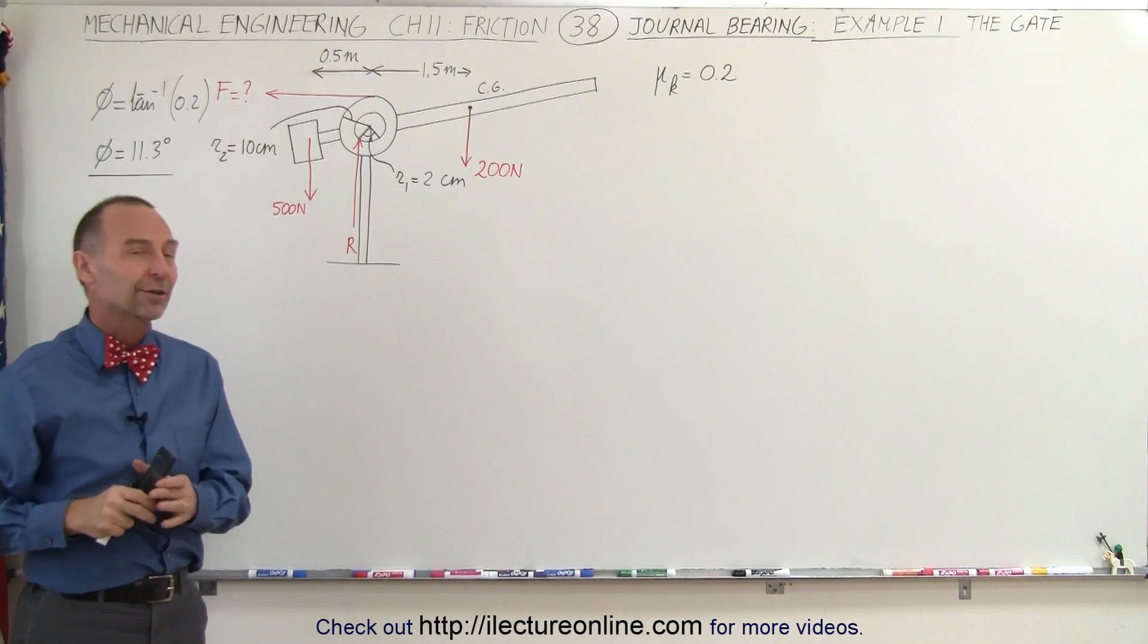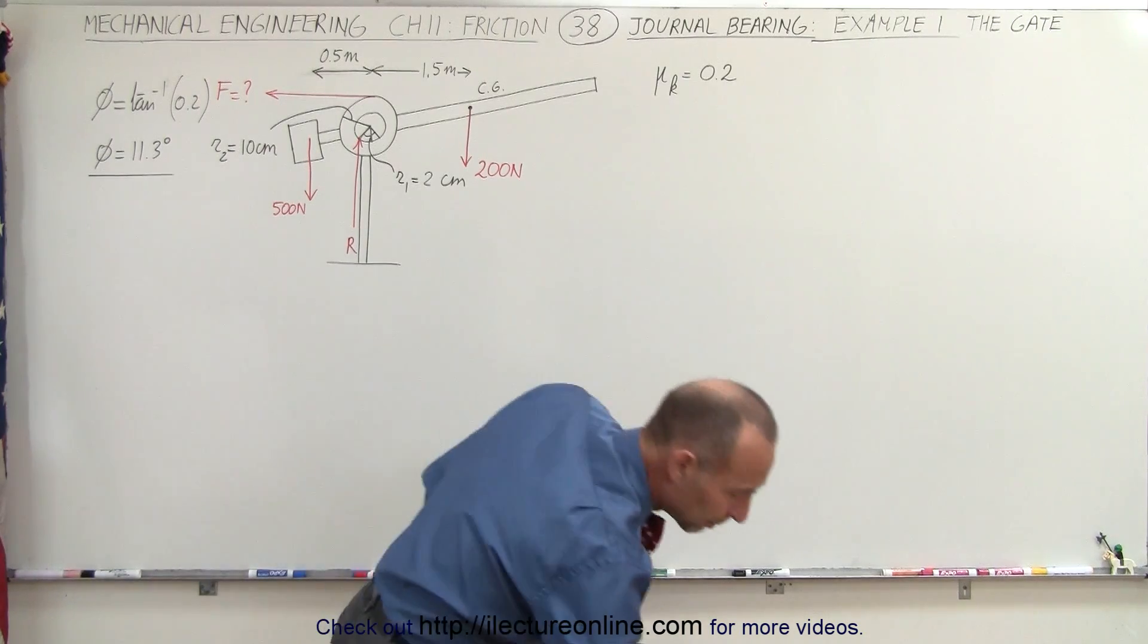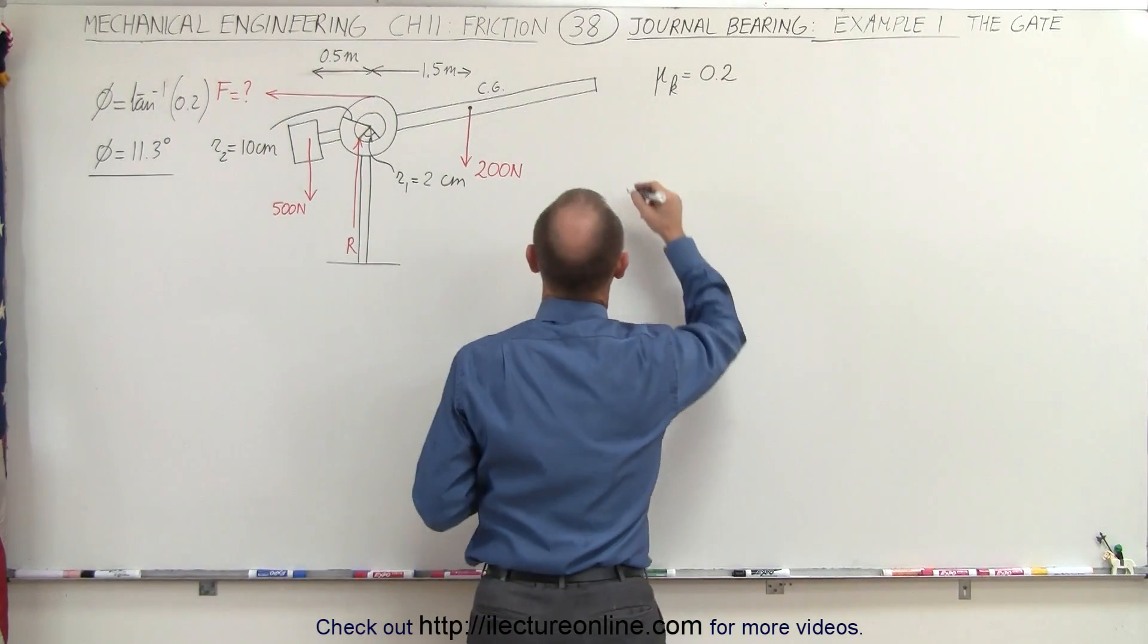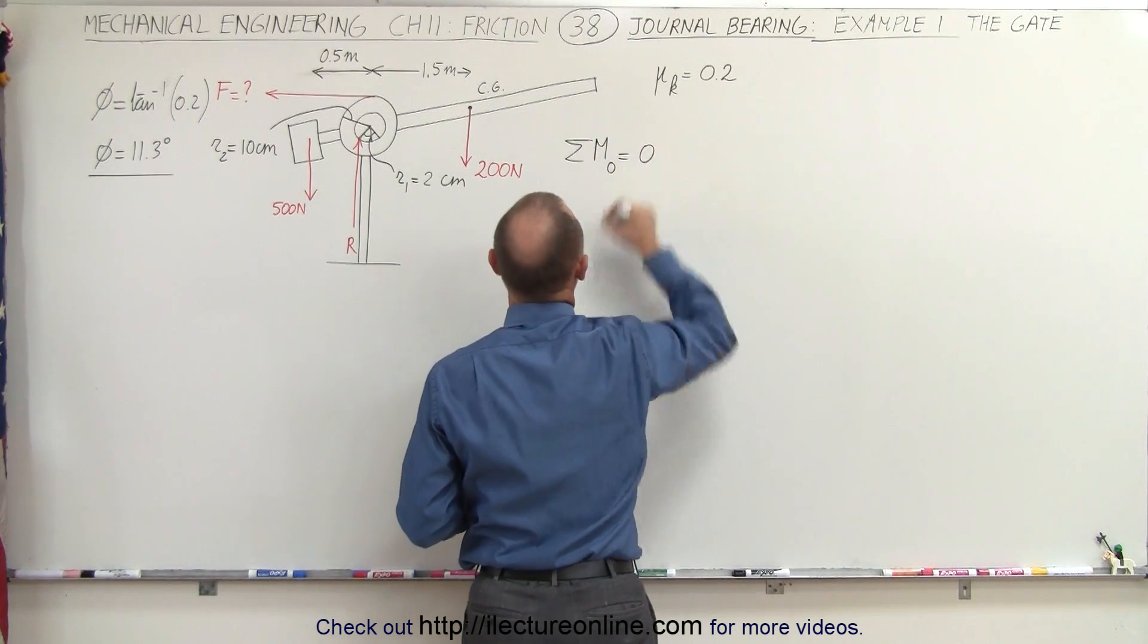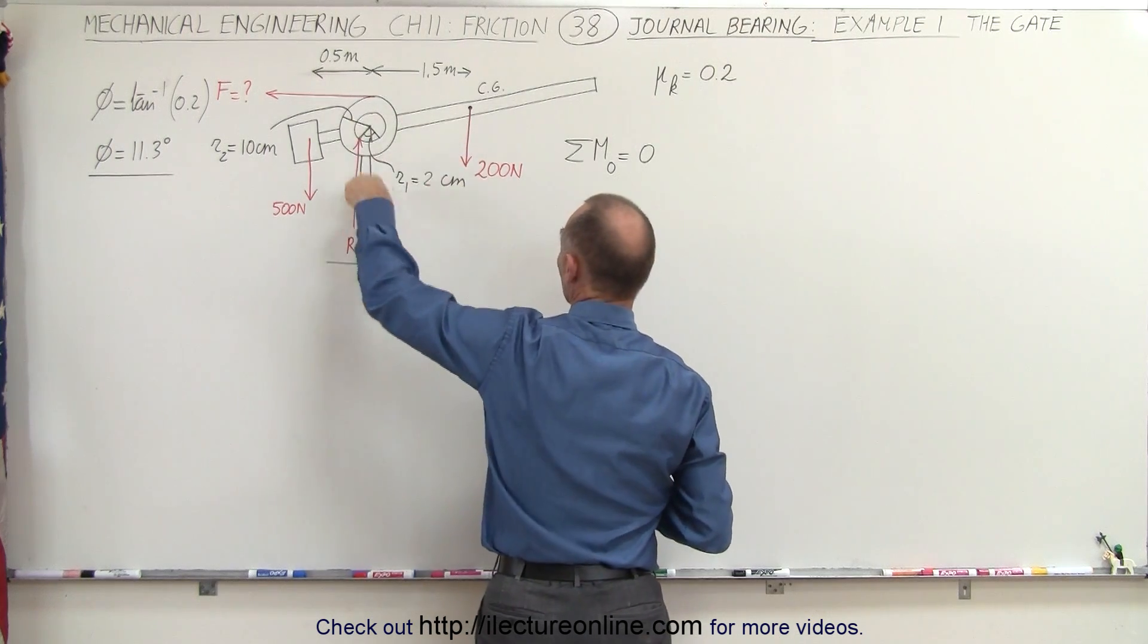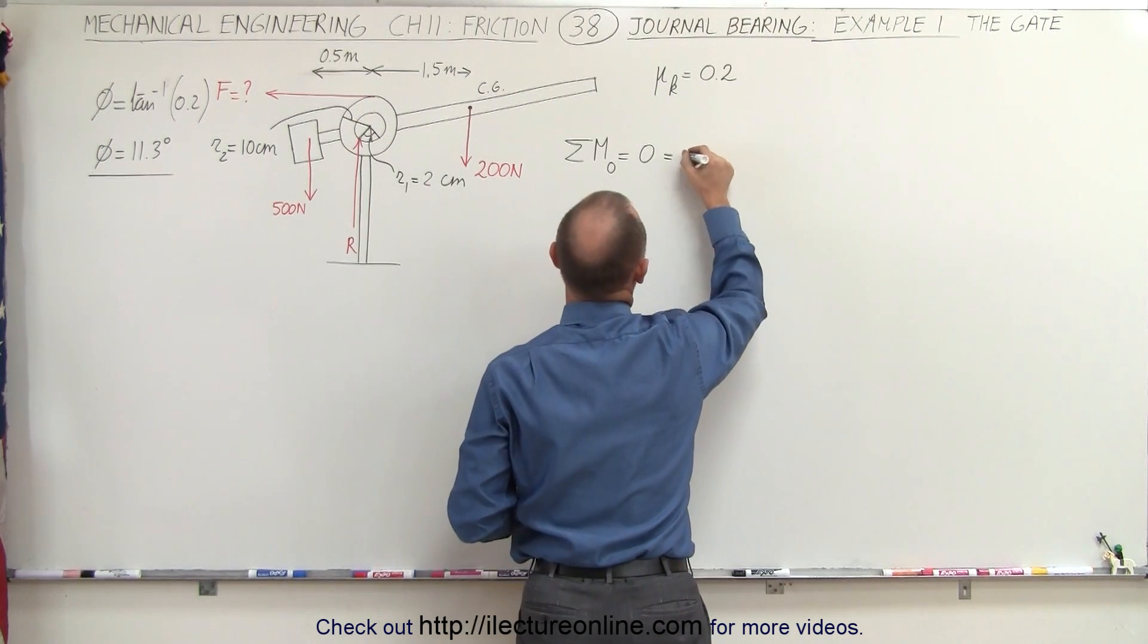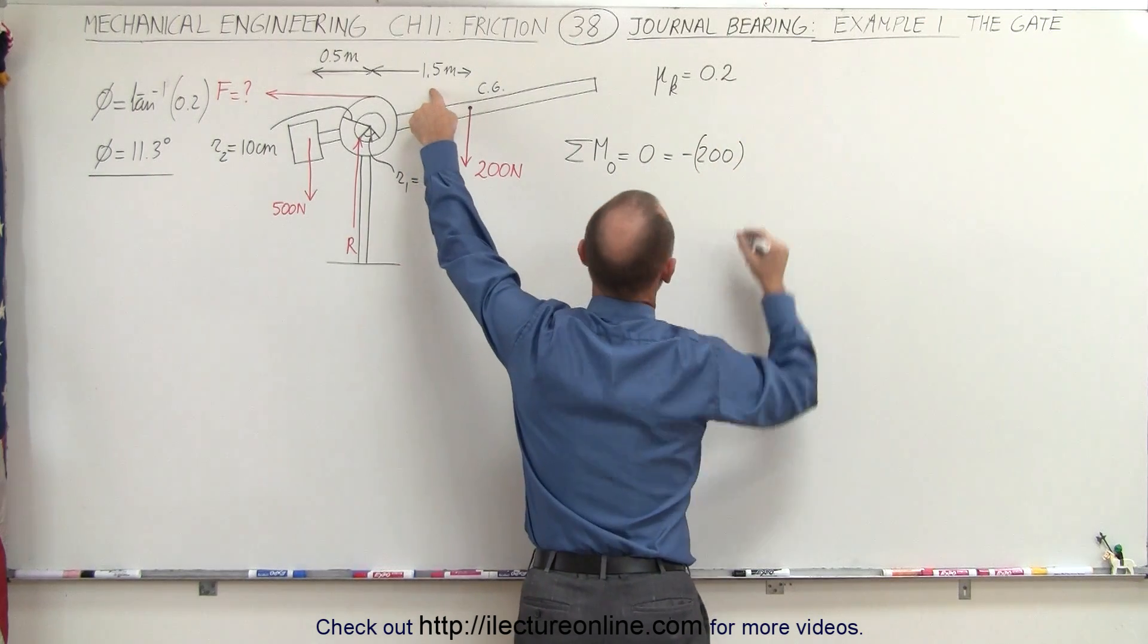So what we're going to do here is we're going to sum up the moments about the center point right there, about the point of rotation. The sum of all the moments about the rotation point should equal zero. We have the 200 newton force acting in a clockwise direction, so that becomes minus 200 times the moment arm, which is 1.5 meters.